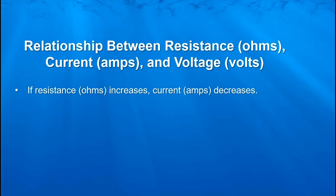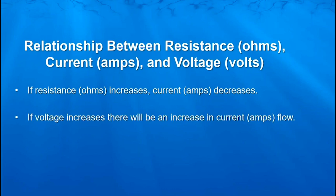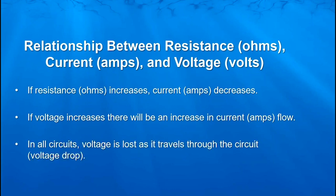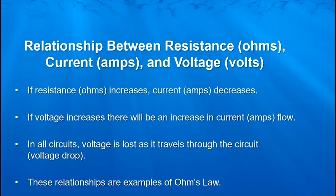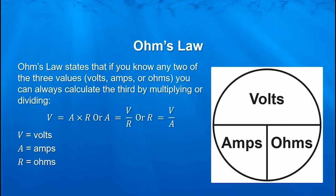If resistance increases, the current decreases. If voltage increases, there's going to be an increase in current flow. So these are givens. In all circuits, voltage is lost as it travels through the circuit. And all of these relationships are examples of what we call Ohm's Law.